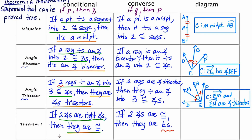Let's really think about the words here. The conditional: if two angles are right angles, then they are congruent. If you have a right angle on the left at 90 degrees and a right angle on the right at 90 degrees, you'd say they're congruent — so that's true. Now the converse: if two angles are congruent, then they are right angles. Imagine an angle at 50 degrees on the left and one at 50 degrees on the right — yes, they're congruent, but are they right angles? The answer is no.